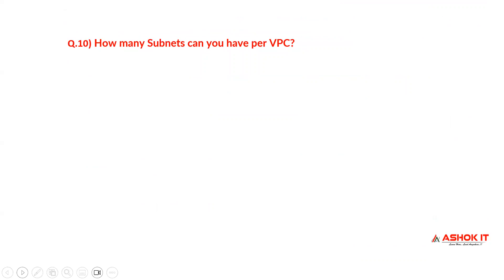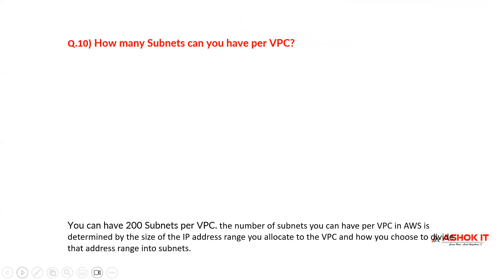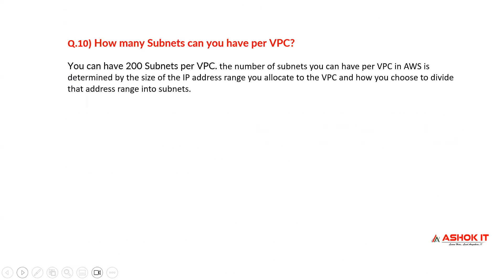How many subnets can you have per VPC? You can have 200 subnets per VPC. The number of subnets per VPC in AWS is determined by the size of the IP address range you allocate to the VPC and how you choose to divide that address range into subnets.